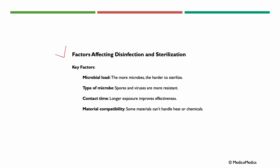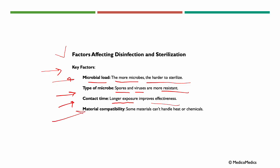Factors affecting disinfection and sterilization include microbial load — the more microbes, the harder to sterilize. The type of microbes matters, as spores and viruses are more resistant. Contact time is also key, as longer exposure improves effectiveness. Material compatibility is another factor, since some materials cannot handle heat or chemicals and need special care to avoid damage.